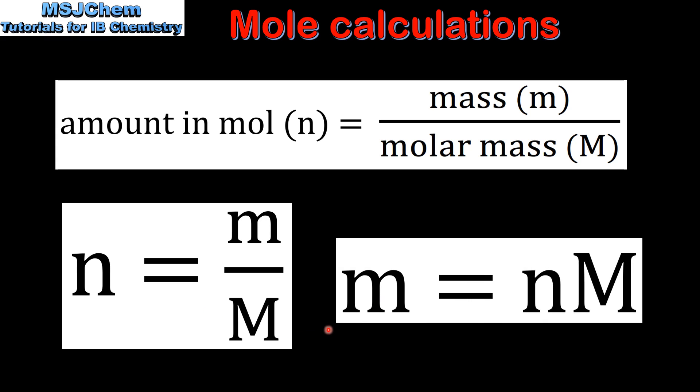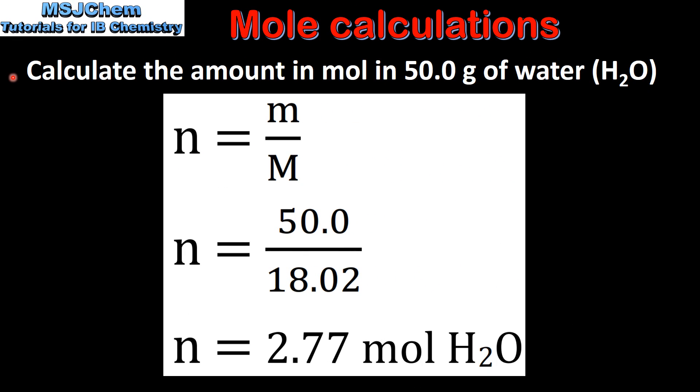This equation can be rearranged to solve for m, which is mass. The mass of a substance equals the amount in moles multiplied by its molar mass. Next we'll look at an example.